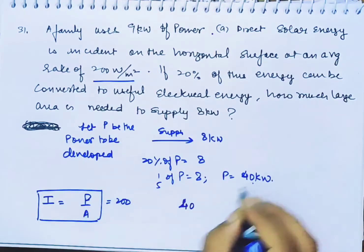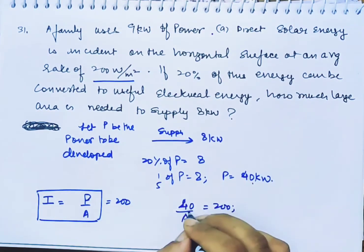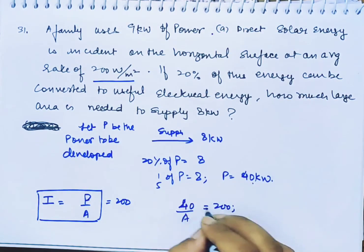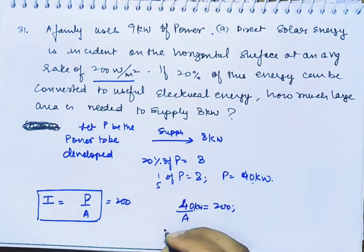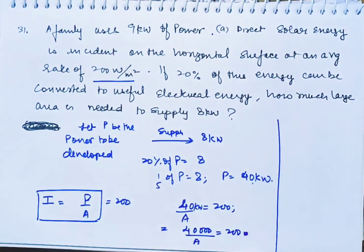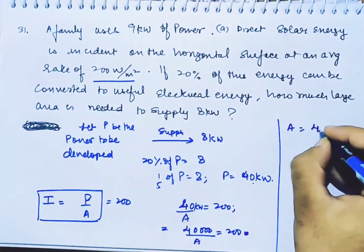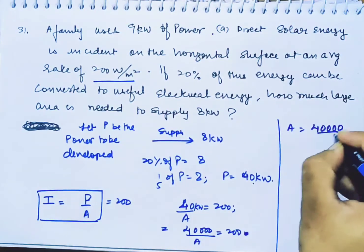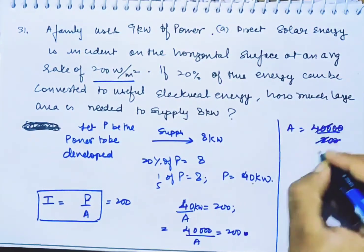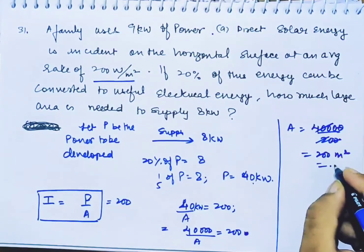We need to convert 40 kilowatt into 40,000 watts. Power upon area equals 200. So the area will become 200 meters squared, and that is the answer to the question.